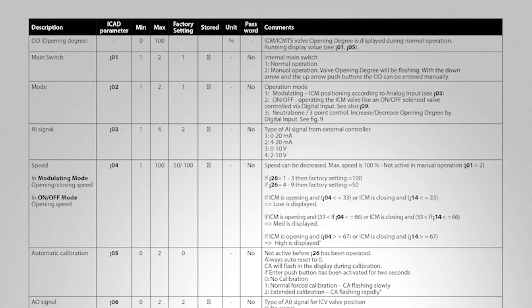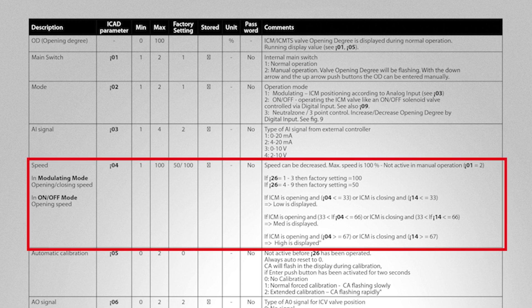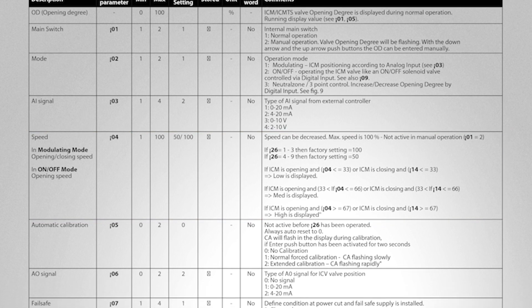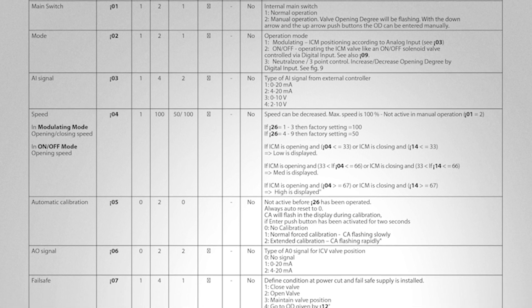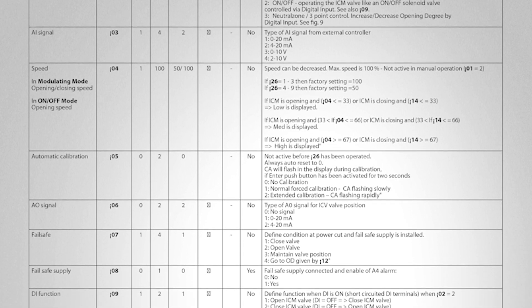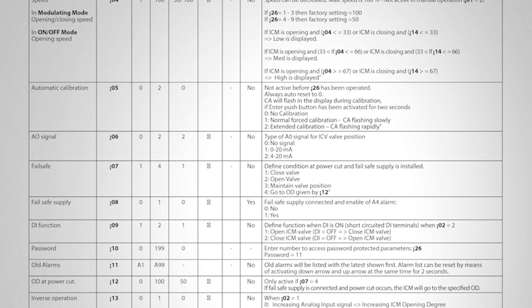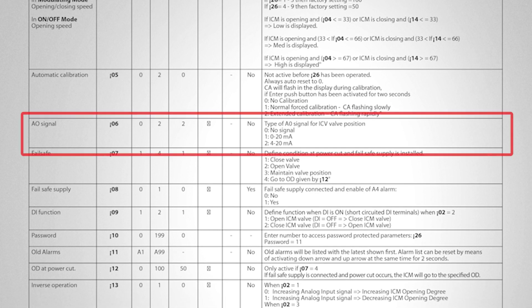Now we will go over the remaining parameters in the iCAD actuator. The speed of the iCAD can be adjusted in IO4. The iCAD 600 is already at maximum speed and the iCAD 1200 is at 50% of the speed. The iCAD also has a feature where you can send an output signal back to the PLC or back to a Danfoss controller, and this can be tuned in parameter IO6.